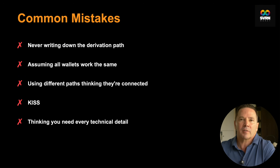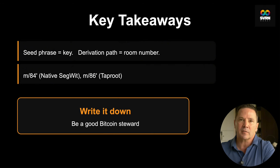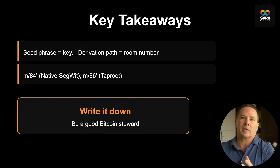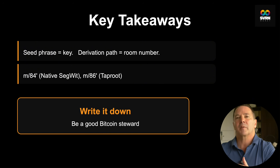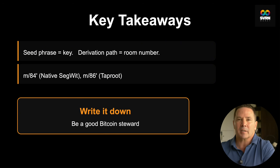You don't need to memorize BIP standards or understand cryptographic math. Just write down M/84 next to your seed phrase. Your seed phrase is the master key to your Bitcoin; the derivation path leads you to the specific apartment where your Bitcoin lives. Legacy is M/44, multi-sig is M/48, nested SegWit is M/49, native SegWit is M/84, and Taproot is M/86. Write down which one you're using — for yourself and for someone who might need to recover your Bitcoin someday. When you recover a wallet, use the same path. If you see a zero balance but know you had Bitcoin, check the derivation path before you panic. Five minutes of knowledge now could save a lot of stress later or prevent your Bitcoin from being lost forever.